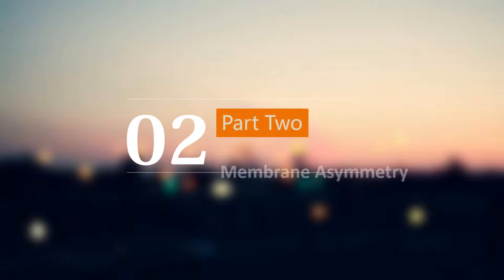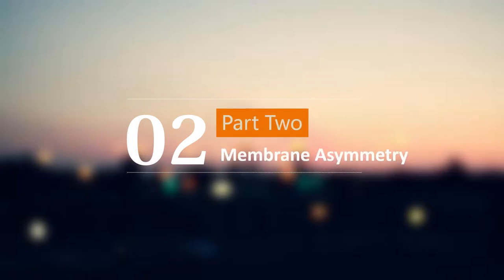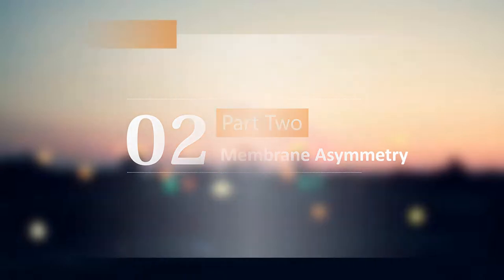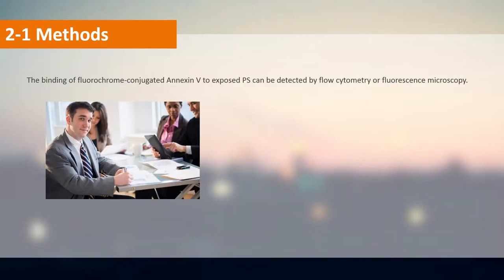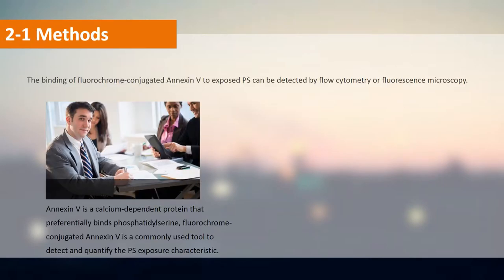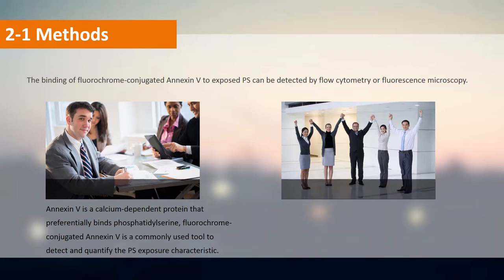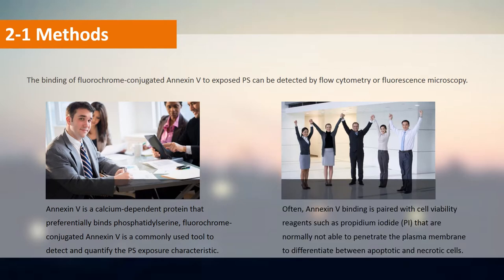The loss of cellular membrane asymmetry is an early sign of apoptosis, wherein embedded phosphatidylserine (PS) residues in the plasma membrane become externalized and signal phagocytosis. Annexin V is a calcium-dependent protein that preferentially binds phosphatidylserine with high affinity. Fluorochrome-conjugated Annexin V is a commonly used tool to detect and quantify the PS exposure characteristic.